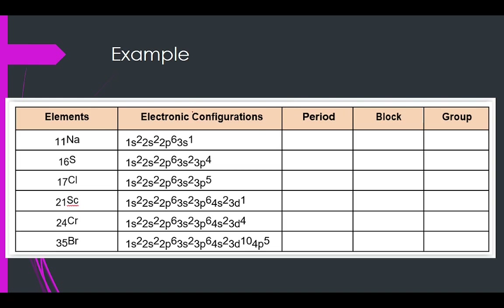Now, given electronic configurations, let's determine the period, block, and group. The period is the largest principal quantum number. For sodium (1s2, 2s2, 2p6, 3s1), the largest n is 3, so period 3. For elements ending with 4s1, even though 3d appears before it, 4 is still the largest principal quantum number, so the period is 4.